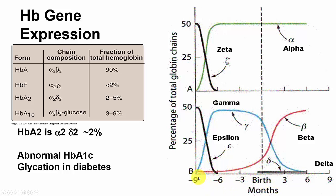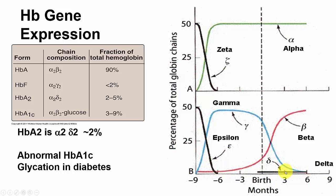Looking at inception — nine months before birth — you start making the epsilon chain, the complement of the beta chain you'll have as an adult, and the zeta chain, the complement of the alpha chain. At about three months gestation, you no longer make epsilon or zeta; you have only alpha for the alpha chain, and gamma has replaced epsilon. The gamma chain persists until just before birth, then decreases to near zero as the beta chain rises. Just before birth, a small amount of delta chain also begins to be made.